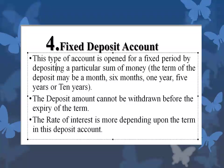The next type of account is the fixed deposit account, or FD. This type of account is opened for a fixed period by depositing a particular sum of money — it may be for a month, 6 months, 1 year, 5 years, or 10 years. The deposited amount cannot be withdrawn before the expiry of the term. For example, if you keep the amount for 1 year, you have to wait for 1 year to withdraw it along with the rate of interest. The rate of interest is higher depending upon the term — it depends on the bank and also differs based on the period chosen.